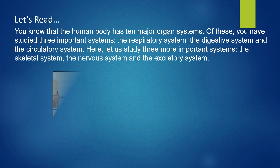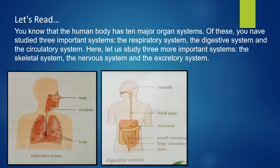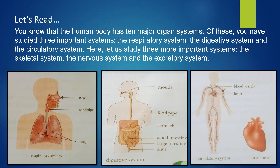You know that the human body has 10 major organ systems. You have already studied three important systems: the respiratory system, digestive system, and circulatory system. Here, we will study three more — the skeletal system, the nervous system, and the excretory system.